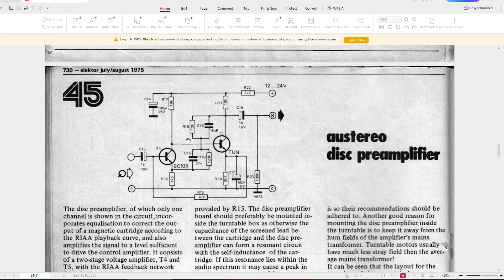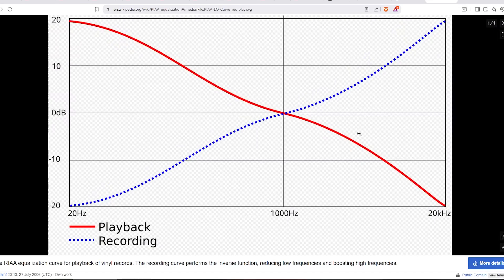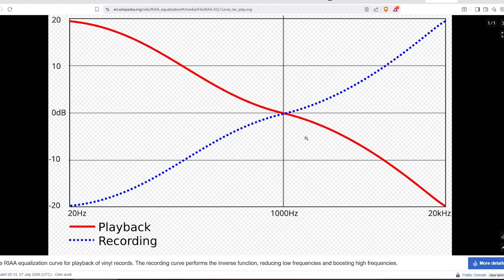What is the RIAA curve? Well, here's a look at an image off of Wikipedia. The blue dotted line represents when the record is recorded, and the red line is representing what the amplifier is doing to correct during playback. We'll notice that on the recording curve, the bass from one kilohertz downwards to 20 Hertz is severely cut. By the time it gets to 20 Hertz, we're down 20 dB. Conversely, above one kilohertz up to 20 kilohertz, we can see that we are boosting those mid-range and treble frequencies by 20 decibels.